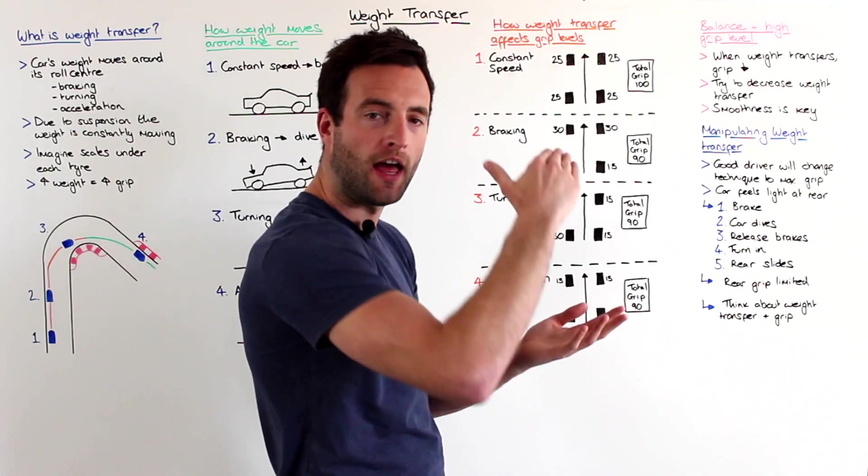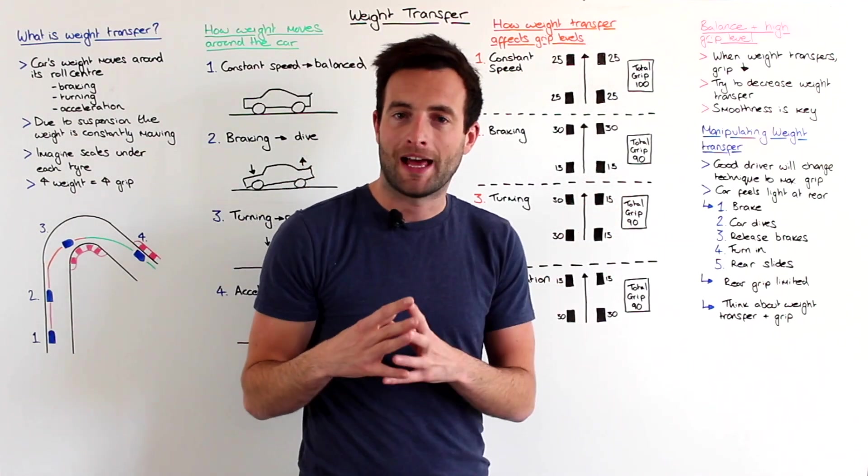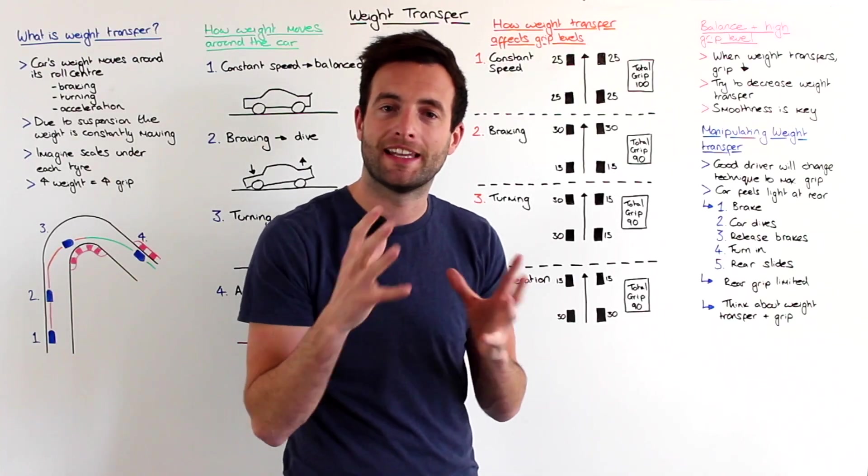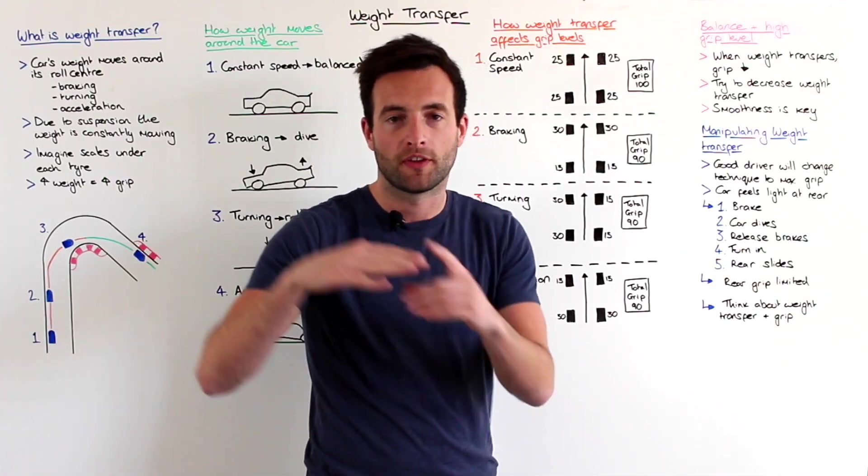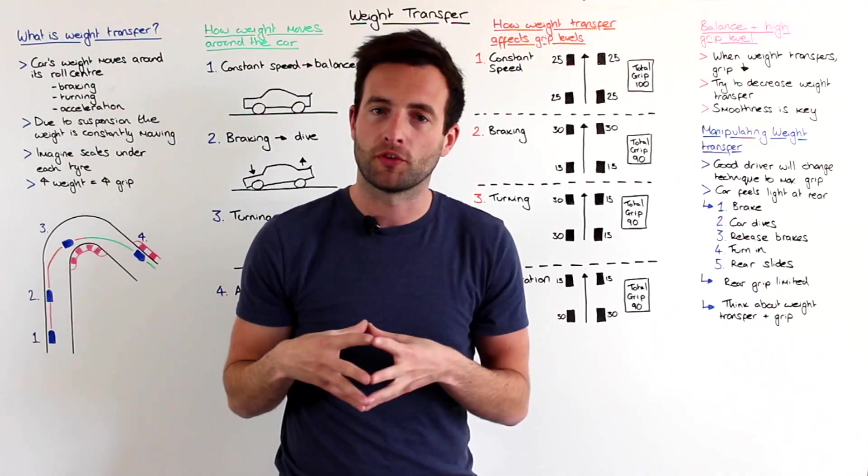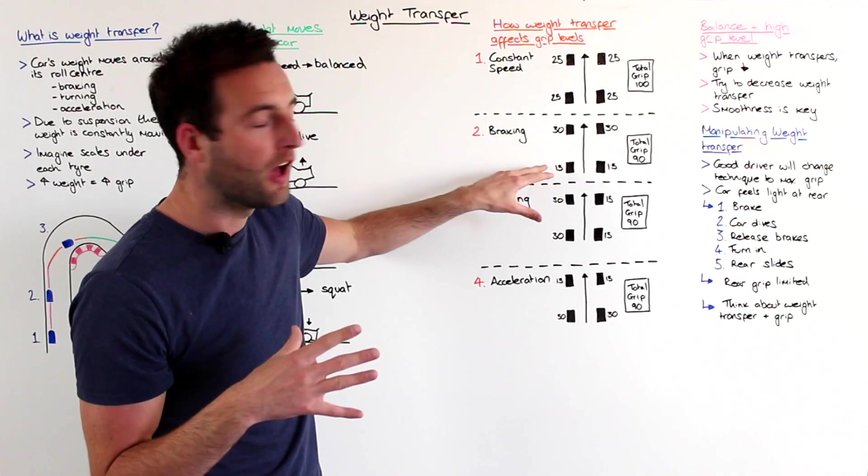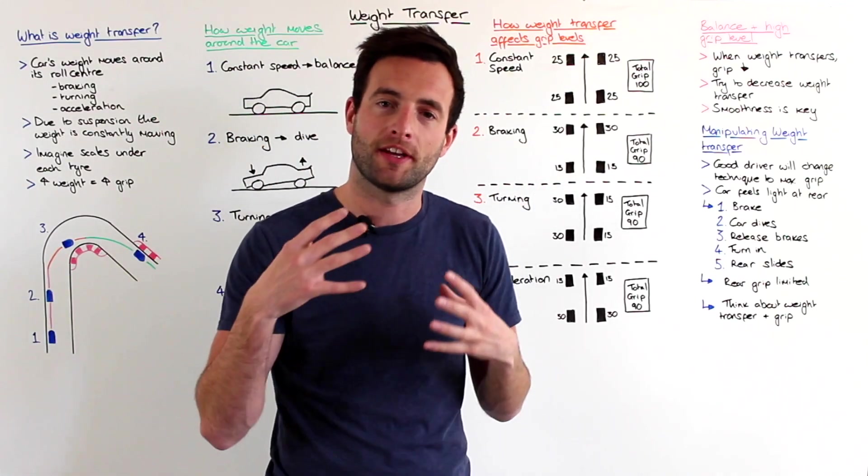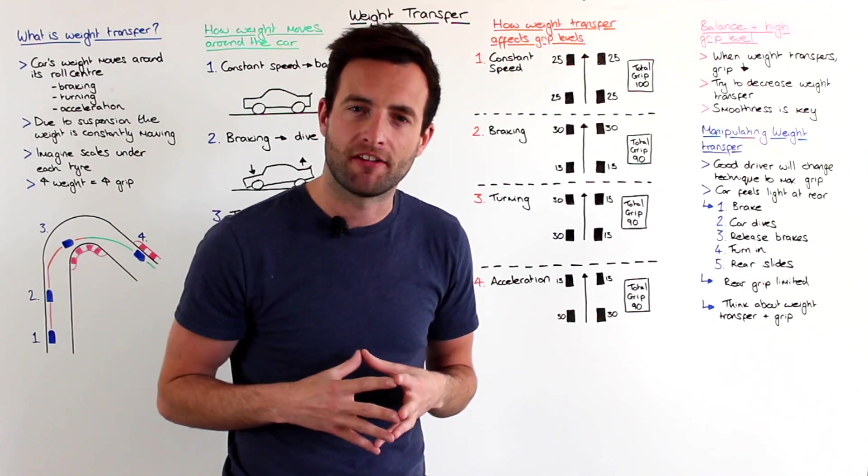However, the driver's in a few laps and they can feel at this point in the circuit the rear of the car is actually a little bit light and it's limiting the car from going into the corner. So, they're braking, the nose is diving, they go to turn in and the rear feels like it's about to slide. So, what's the problem here? Well, the problem is that there's too much grip at the front of the car and not enough grip at the rear. So, a good driver will think, well, how can I change this?